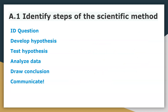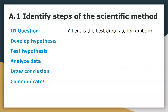Now we'll go over some more relatable examples of the scientific method in practice. One topic a lot of students talk about is Minecraft. A common question while farming for item drops is: where is the best drop rate for a particular item? The logical hypothesis you might have is that a specific location — for example, the desert — might have a better drop rate. So your hypothesis would be: the best place for that item is in the desert.